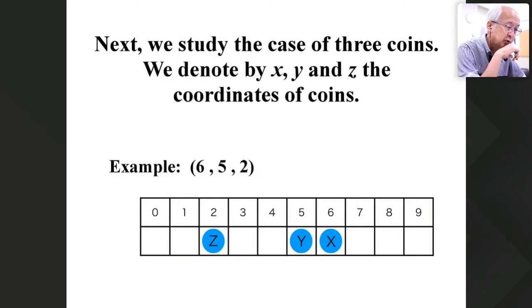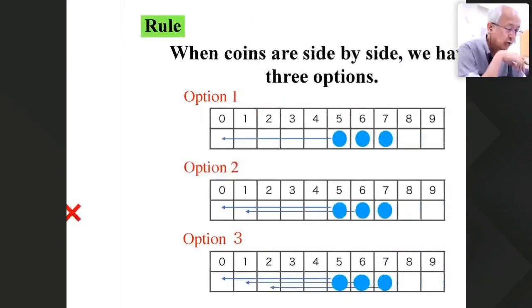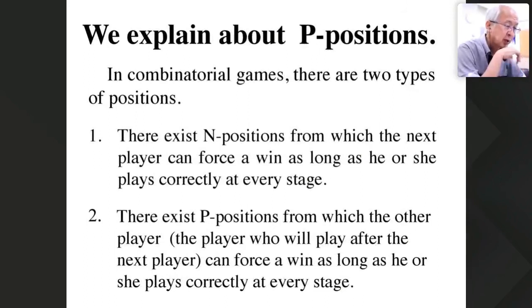Next, we start the case of three coins. The situation is quite complicated. The rule is almost the same. Now we cannot use Grundy number because the structure is very complicated. So we have only two positions: N position and P position. N position is from which the next player can force a win as long as he or she plays correctly. So this means next player's winning position. And P position is the previous player's winning position.